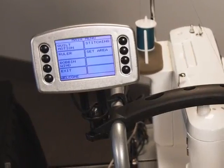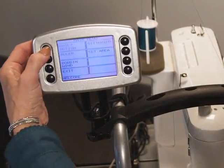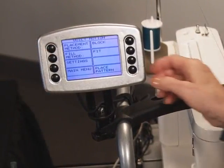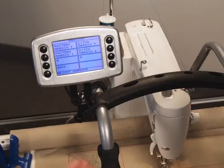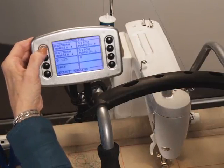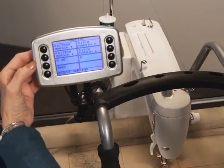To access this feature from the display, select the quilt motion button followed by the place pattern button. Pressing the up and down arrow buttons will change the margin amount which is displayed just below your down arrow button.